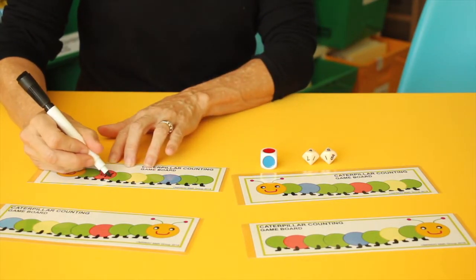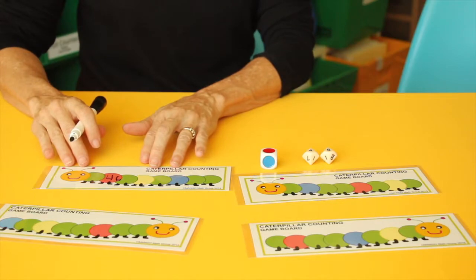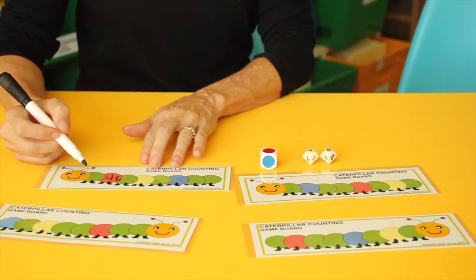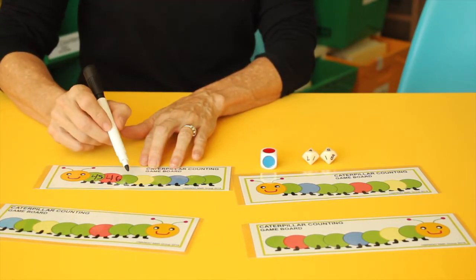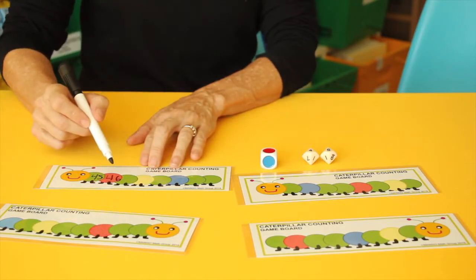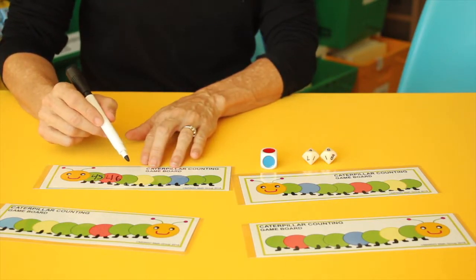So they'll write 46 on their caterpillar, and then they're going to have to determine what comes the number before 46, which would be 45, and then what comes after it. And they'll fill in the rest of their caterpillar with the correct sequence of numbers.